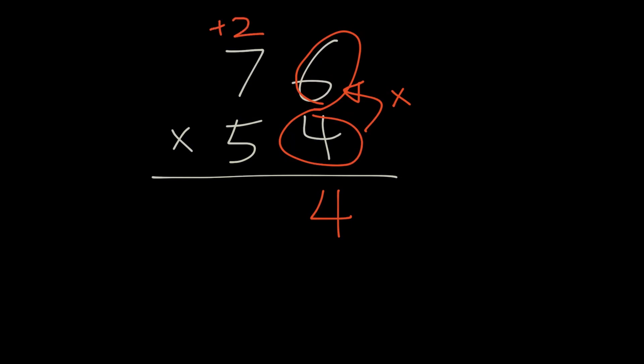So, we're adding a plus 2 on top of 7. Then we're going to times 4 by 7. That equals 28 plus the 2 on top equals 30.